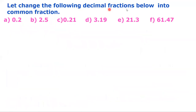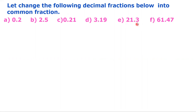Let's change the following decimal fractions into common fractions. A: 0.2 — whole number is 0, decimal number is 2. B: 2.5 — whole number is 2, decimal number is 5. C: 0.21 — whole number is 0, decimal number is 21. D: 3.19 — whole number is 3, decimal number is 19. E: 21.3 — whole number is 21, decimal number is 3. F: 61.47 — whole number is 61, decimal number is 47.